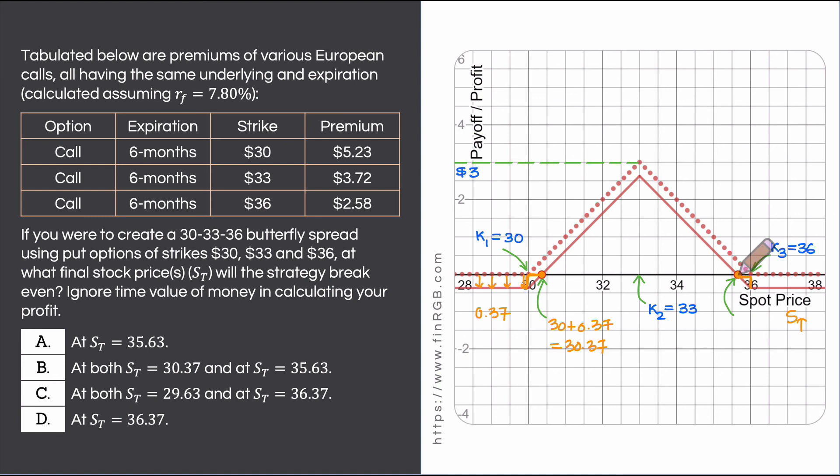Similarly, this break even happens at a stock price which is 36 minus this distance which is equal to this vertical distance which is 0.37. So 36 minus 0.37 gives you 35.63.